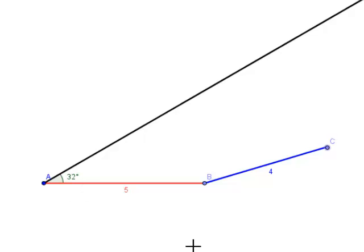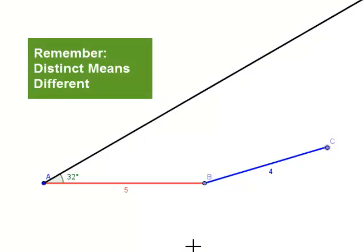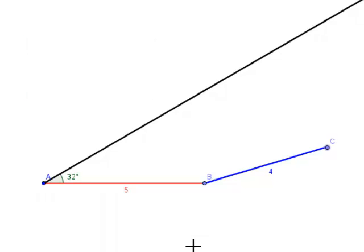So the question is, how many distinct triangles can we form with this information? If there's only one distinct triangle, then this is enough information to prove that two triangles are congruent. However, if we can form two different triangles, then it's not enough information.